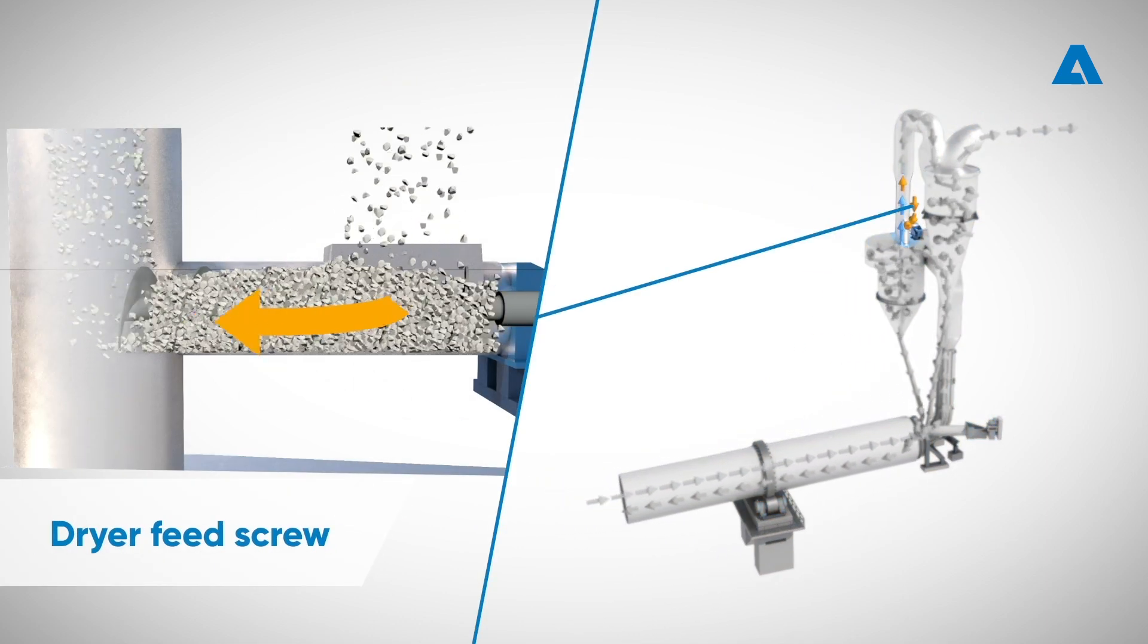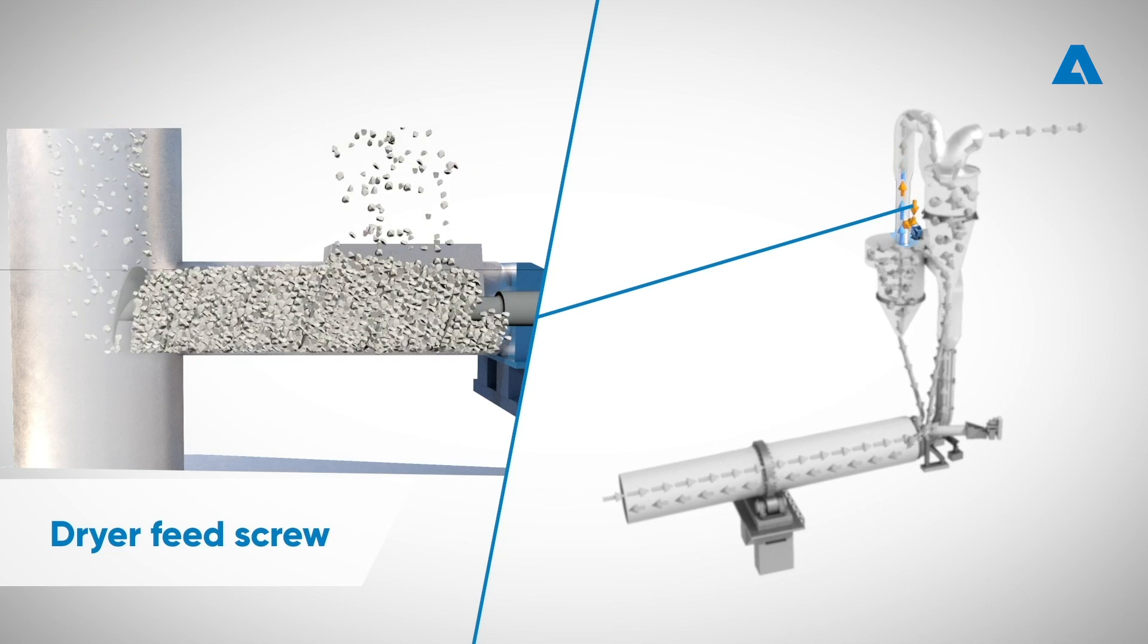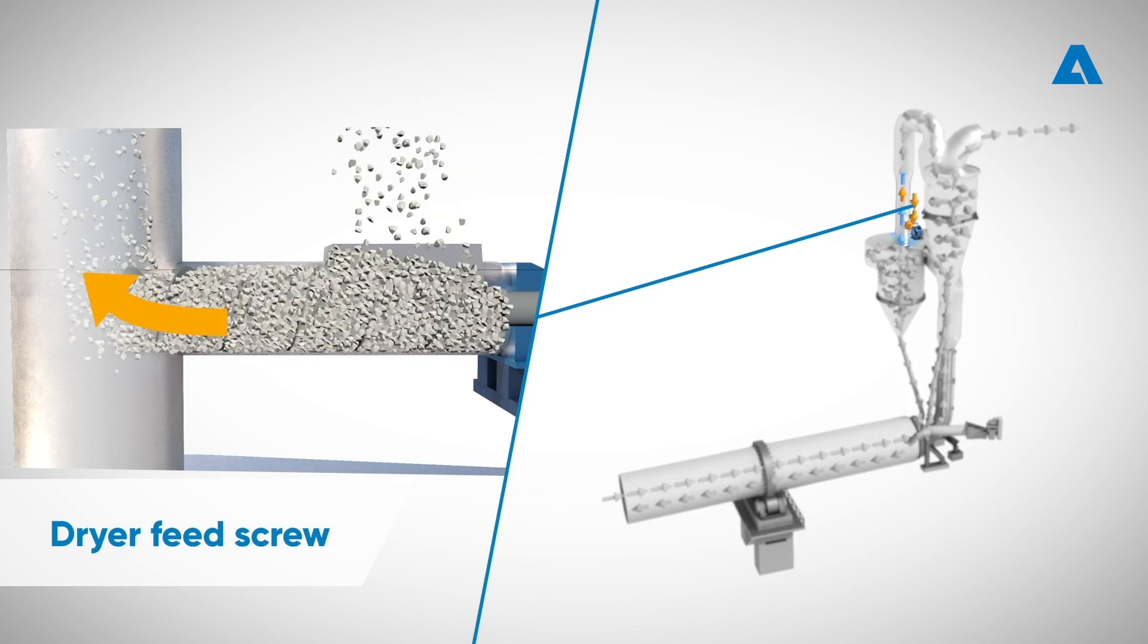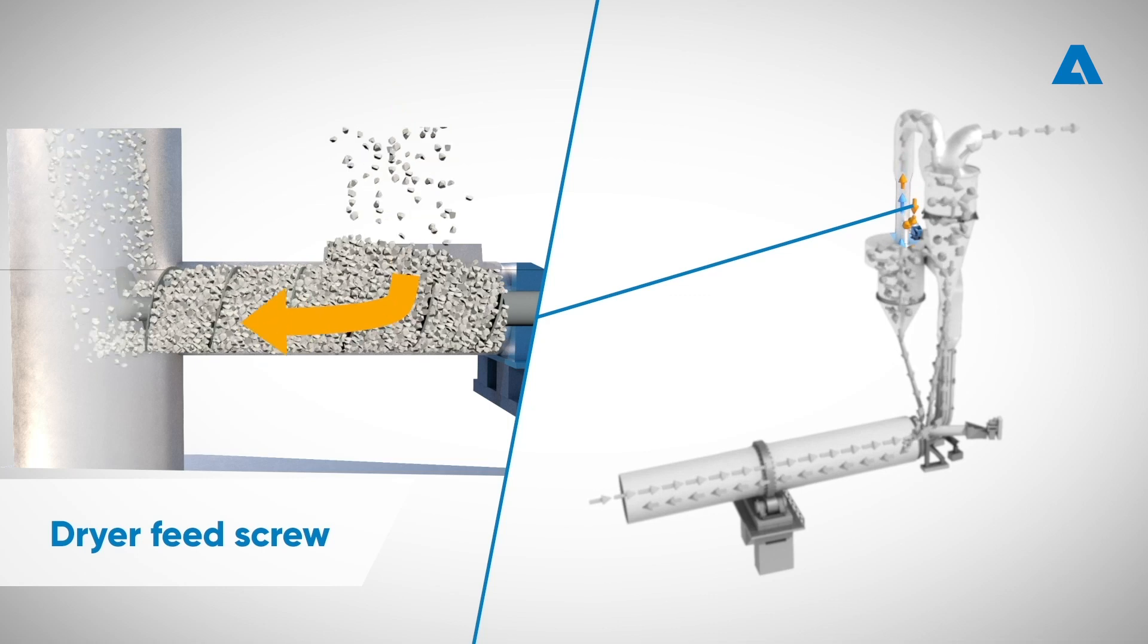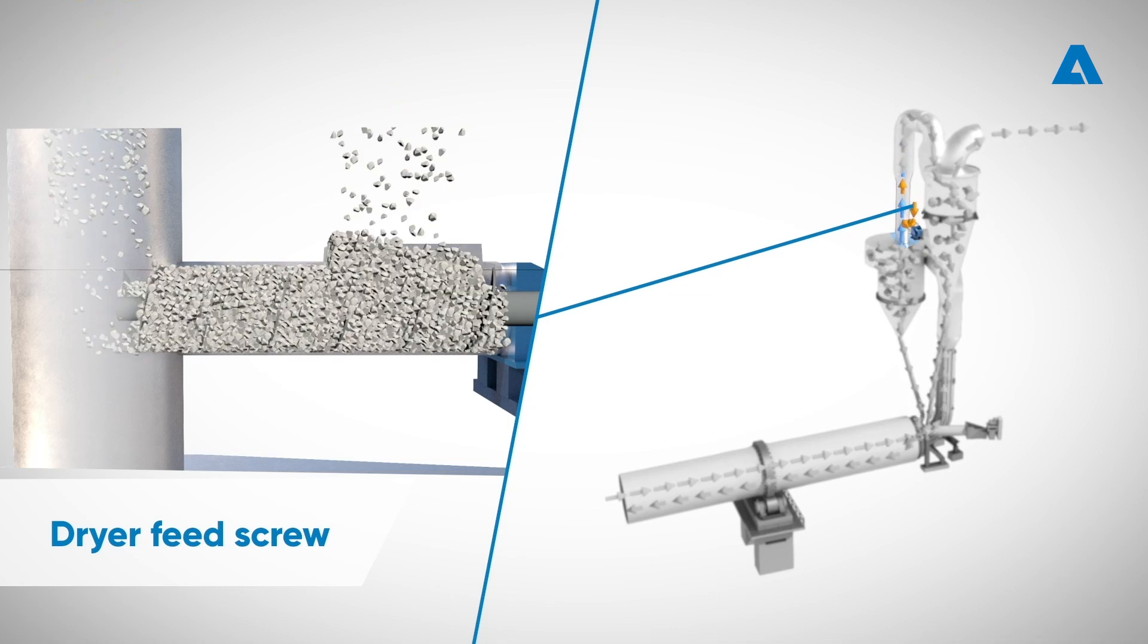The dryer feed screw conveys the lime mud coming from the lime mud filter into the flue gas stream where it is entrained, flash dried and carried upwards with the flue gas to the drying cyclone.